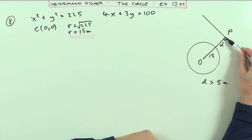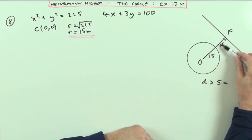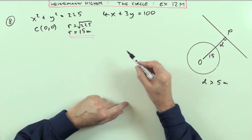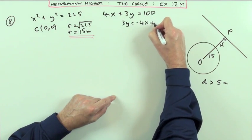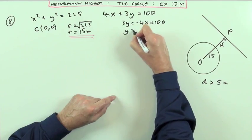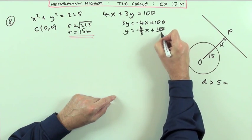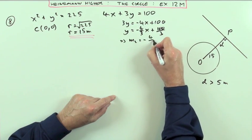If you've got the equation of the line OP, you can find the intersection with this line here. The clue is that this line has to be at right angles to this line. I'll rearrange: 3y = -4x + 100, so y = -4/3x plus 100/3. This tells me the gradient of the line is -4/3.